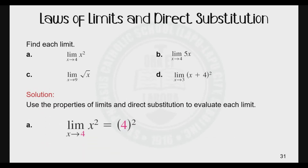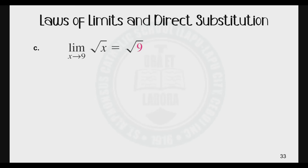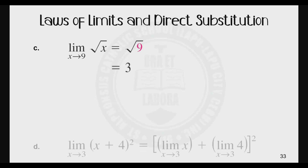Let's apply the laws of limits and direct substitution. Find the limit of x squared as x approaches 4 — substitute 4 for x: 4 squared gives us 16. Next, find the limit of 5x as x approaches 4 — that equals 5 times the limit of x as x approaches 4, or simply substitute 4 for x: 5 times 4 gives us 20. Next, find the limit of the square root of x as x approaches 9 — substitute 9 for x: the square root of 9 is 3.